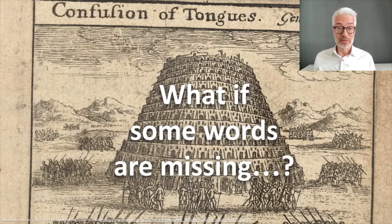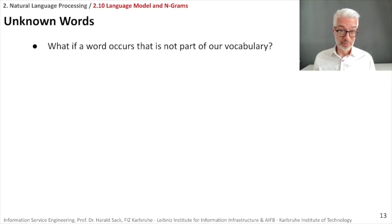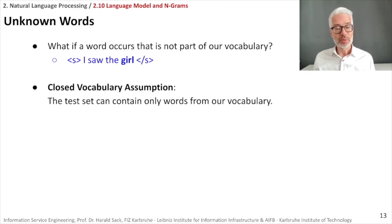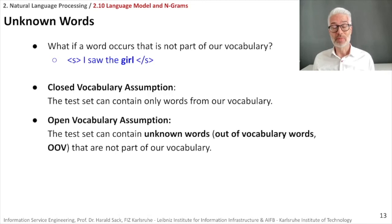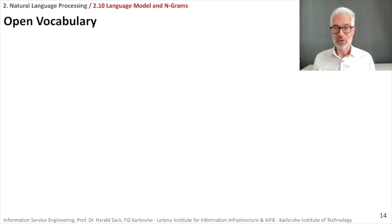So far, so good. One thing we still have to address is what if some words or bigrams are missing? What are we doing with so-called unknown words? What if a word occurs that is not part of our vocabulary? For example, what's the likelihood that there is the sentence I saw the girl? You distinguish between two different kinds of worlds. You have the close vocabulary assumption, which means your test set is only allowed to contain words that occur really also in our vocabulary. However, we are living in an open world, which means the open vocabulary assumption holds, which means the test set can contain unknown words, also referred to as out of vocabulary words that are not part of our vocabulary.